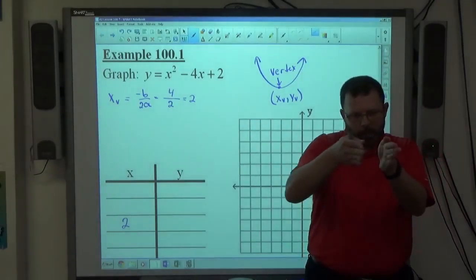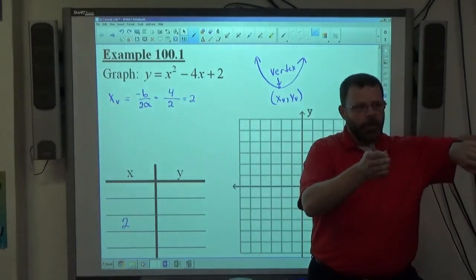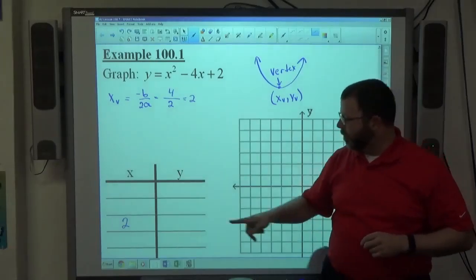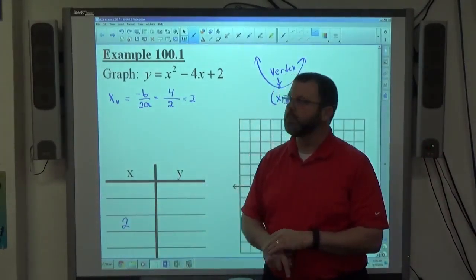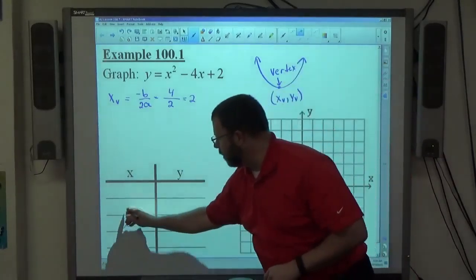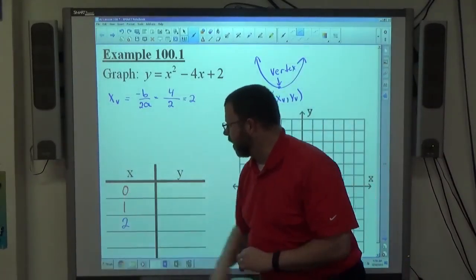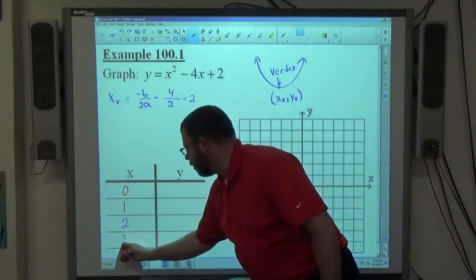Alright. Because my vertex is here, I want to get a couple numbers on this side of it and a couple numbers on that side of it. So I want to pick a couple numbers smaller than 2 and a couple numbers bigger than 2 over here on the x. So if I pick going smaller, I get 1 and 0. And going bigger, I get 3 and 4.